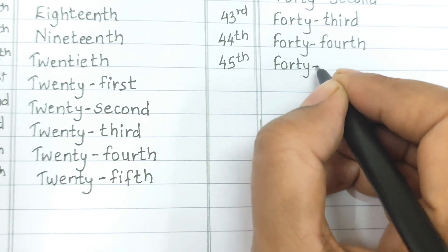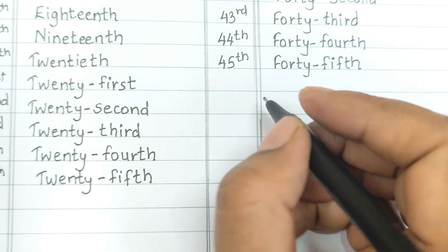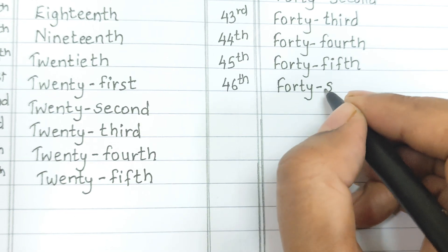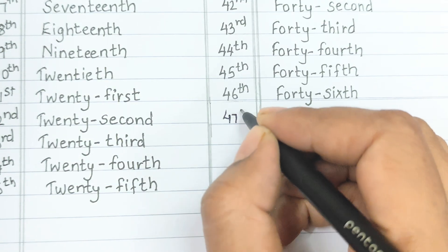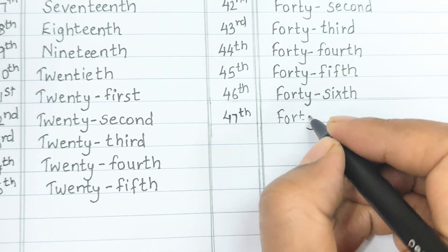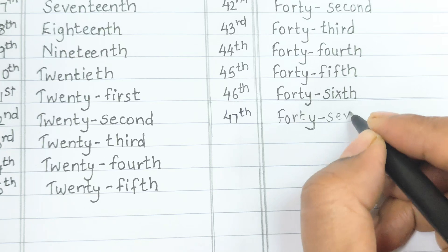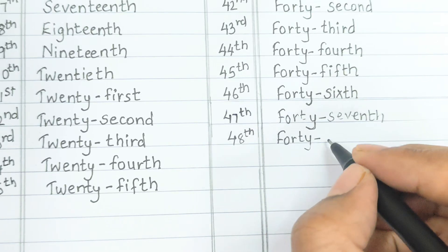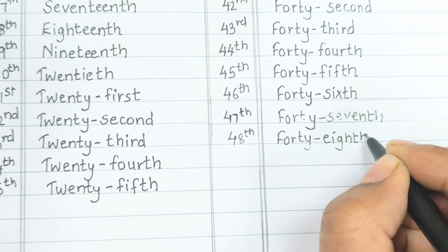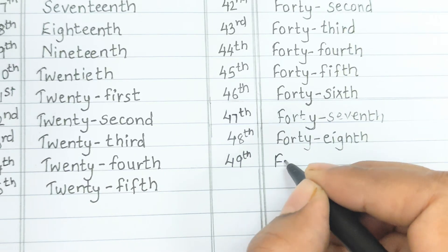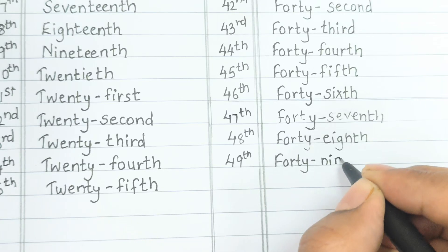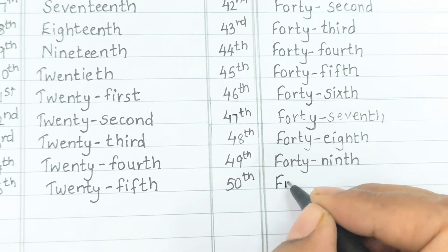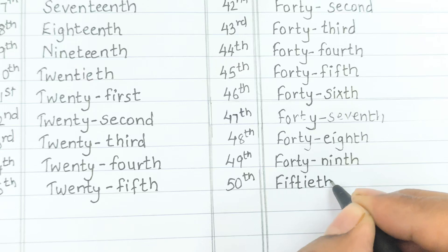Forty-sixth: F-O-R-T-Y-S-I-X-T-H. Forty-seventh: F-O-R-T-Y-S-E-V-E-N-T-H. Forty-eighth: F-O-R-T-Y-E-I-G-H-T-H. Forty-ninth: F-O-R-T-Y-N-I-N-T-H. Fiftieth: F-I-F-T-I-E-T-H.